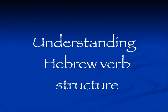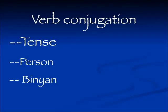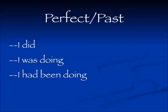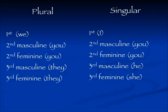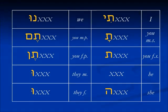Shalom! Today we are continuing the series in understanding Hebrew verb structure. In this series we are covering the different tenses, the different persons, and the different binyanim. If you're not familiar with these terms you need to go back and look at the very earliest videos. We're still working in the perfect or the past tense. Today we're going to cover the hifil binyan. Remember that every past tense verb is conjugated for these ten different forms, but in every binyan the endings for the past tense are always the same, and I hope by now that you have memorized these endings.